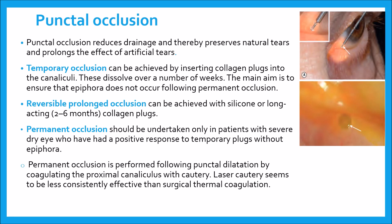Permanent occlusion should be undertaken only in patients with severe dry eye who have had a positive response with temporary plugs without epiphora. It should be avoided in patients, especially if young, who may have reversible pathology. All four puncta should not be occluded at the same time. Permanent occlusion is performed following punctal dilation with thermal coagulation, coagulating the proximal canaliculus. Following successful occlusion, it is important to watch for signs of re-canalization. Laser cautery seems to be less consistently effective than surgical thermal coagulation.